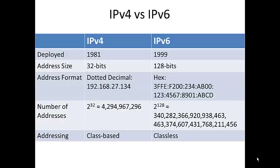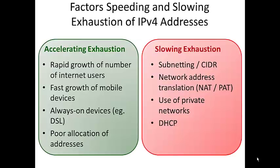IP version 6 was launched in 1999. The biggest difference is the amount of address space. IPv4 only supports 32-bit addressing, which gives 4.3 billion addresses, but IP version 6 supports 128-bit addressing, which is a really huge number. Each additional bit of address space doubles the number of supported addresses, so 2 to the 128th power is an enormous number — basically enough addresses that the world will never run out.